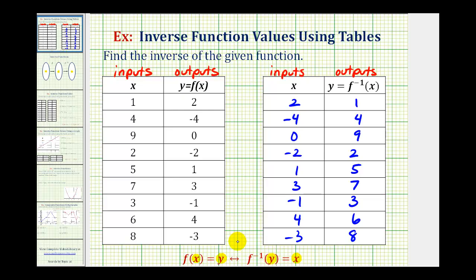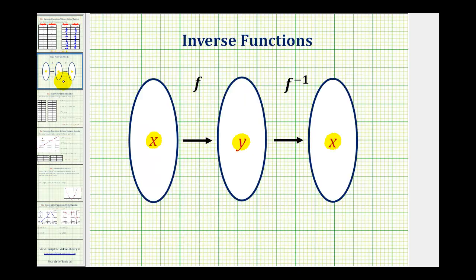One other nice way to show this is to map this relationship. For example, here's our function f. When the input is x, the output is y, and this becomes the input into the inverse function, which returns the output of the original value of x.